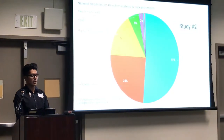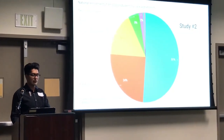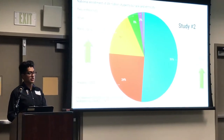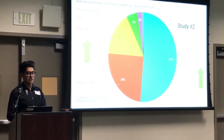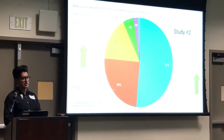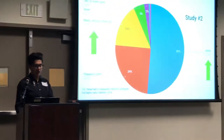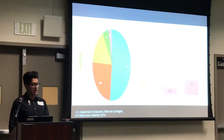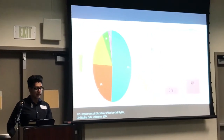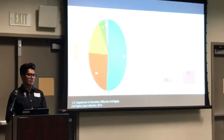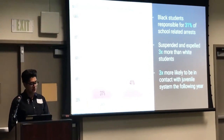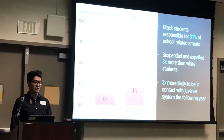According to the U.S. Department of Education, there were 49 million students enrolled in K-12 education in 2016. White students contribute 51% of the population versus 60% for African-American students. However, regarding multiple suspensions, white students only account for 31% while black students account for 41% — a significant difference. Black students are also responsible for 31% of school-related arrests, are suspended and expelled three times more than white students, and are three times more likely to be in contact with the juvenile system the following year.